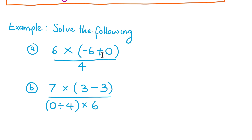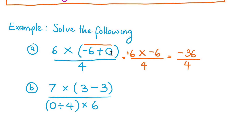Here we have two examples. The first says: six times (negative six plus zero), all over four. Using order of operations, we solve the parentheses first: negative six plus zero gives negative six. So we have six times negative six, which is negative 36, divided by four. A negative divided by a positive gives a negative, and 36 divided by four gives nine, so the answer is negative nine.